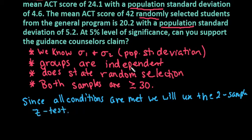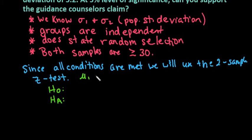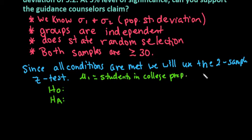You always want to identify which test you're using. In some places like the AP stats test, they will accept you writing it out or using the formula. Now that we've established which test we're using, our next step is to set up the null and alternative hypotheses. I'm going to let mu1 represent the college prep students and mu2 represent students in the general program.